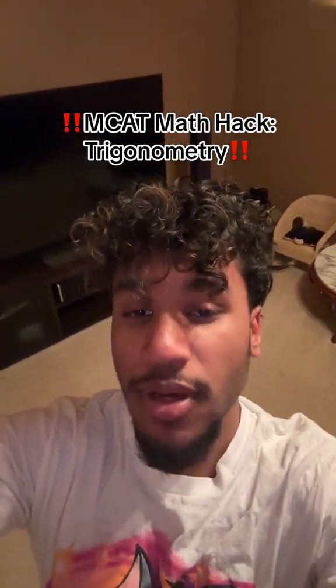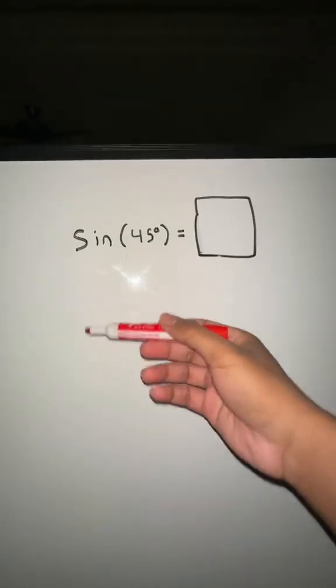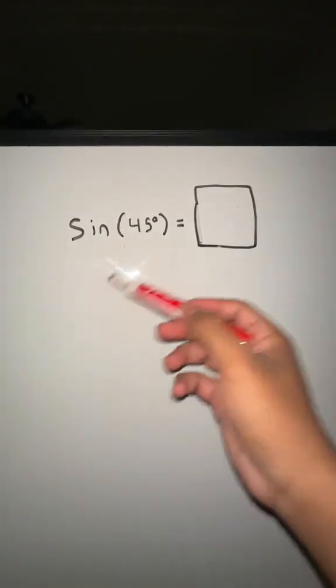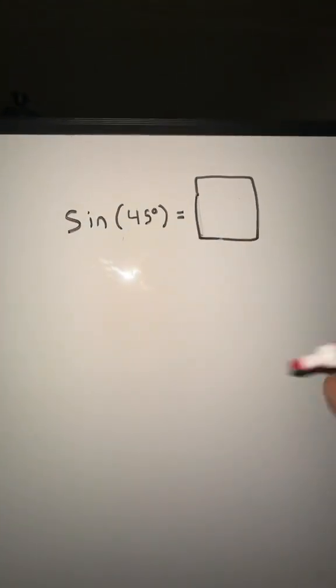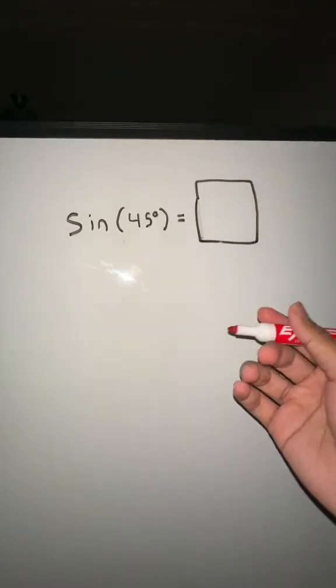Let me show you a crazy MCAT trigonometry hack. So sometimes in the MCAT, you'll be told like sine of this equals this or cosine of this is this, but there are times where they don't tell you and you might need it in an equation. And you have to use your memory or knowledge to figure it out.